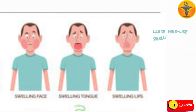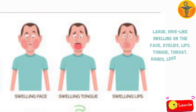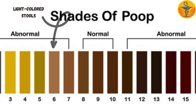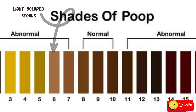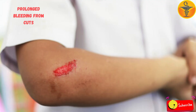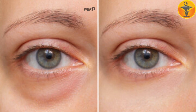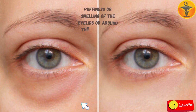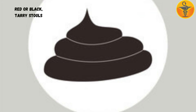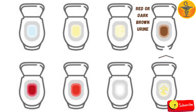Large hive-like swelling on the face, eyelids, lips, tongue, throat, hands, legs, feet, or sex organs. Light-colored stools. Paralysis. Prolonged bleeding from cuts. Puffiness or swelling of the eyelids or around the eyes, face, lips, or tongue. Red or black tarry stools. Red or dark brown urine.